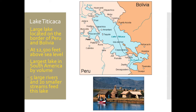The final geographic feature we're going to discuss is Lake Titicaca, which is a very, very high lake. It's extremely large, located on the border of Peru and Bolivia, at 12,500 feet above sea level — literally more than two miles above sea level. It is the largest lake in South America by volume, meaning it has more water than any other lake on the continent. It is fed by five large rivers and 20 smaller streams. Much of Incan religion comes from legends surrounding Lake Titicaca. The name comes from the indigenous language of the Inca people, not English.